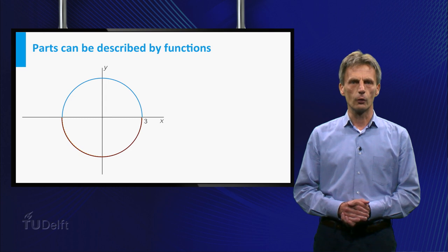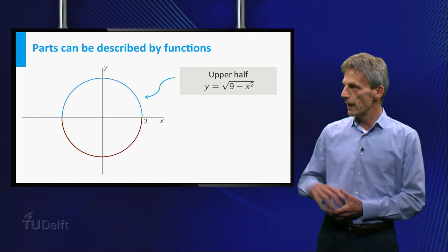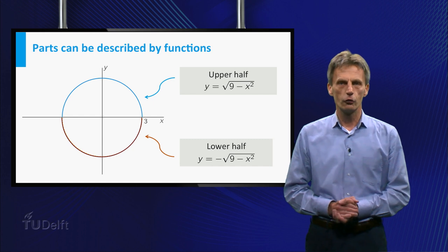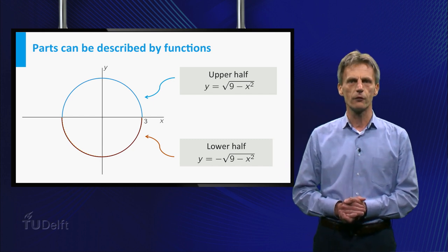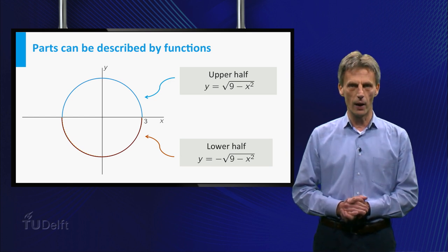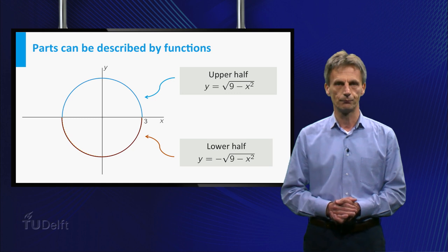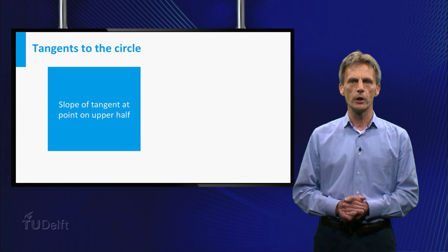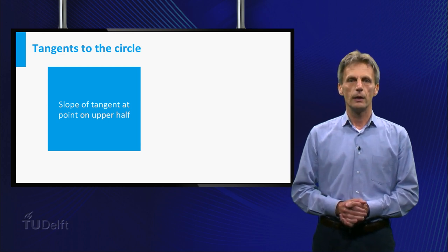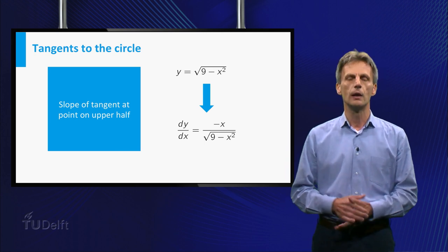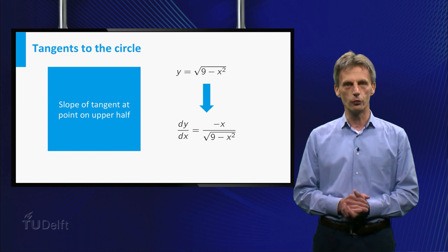Suppose you need to compute the slope of the tangent line to the circle at one of its points. We don't have an explicit formula in this case, because the equation of the circle is not of the form y is equal to f. We can divide the circle into two parts described by explicit formulas, namely the upper half and the lower half. The two functions, plus and minus the square root of 9 minus x squared, are defined implicitly by the equation x squared plus y squared is equal to 9. If we want to find the slope of the tangent line at a point on the upper half, we take the explicit formula y is the square root of 9 minus x squared and compute the derivative in the usual way.